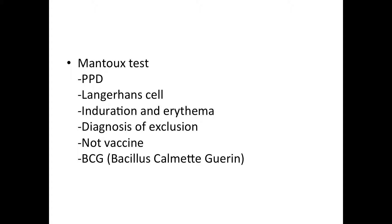First, you inject the suspected patient with a PPD — purified protein derivative — that is taken from the Mycobacterium tuberculosis and you inject it into the skin. The dendritic cells called the Langerhans dendritic cells of the skin will digest it and work as an APC. After the whole sequence, there will be an induration, which means thickening, and erythema, which means reddening of the skin.